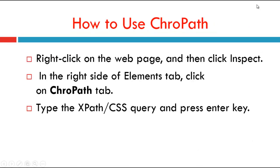How to use Crowpath? Right-click on the web page and then click Inspect. In the right side of the element tab, click on the Crowpath tab. Type the XPath or CSS query and press the Enter key.